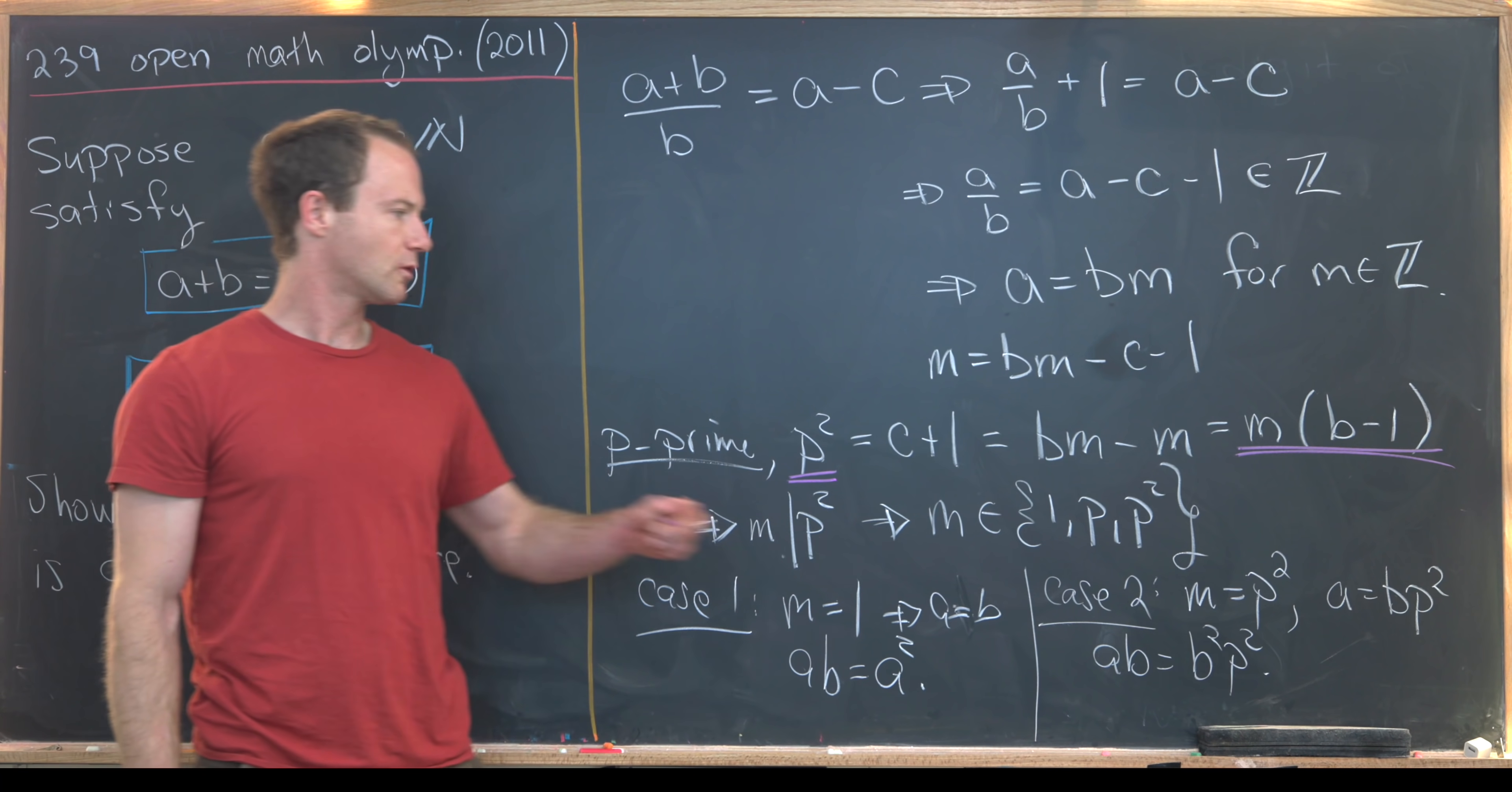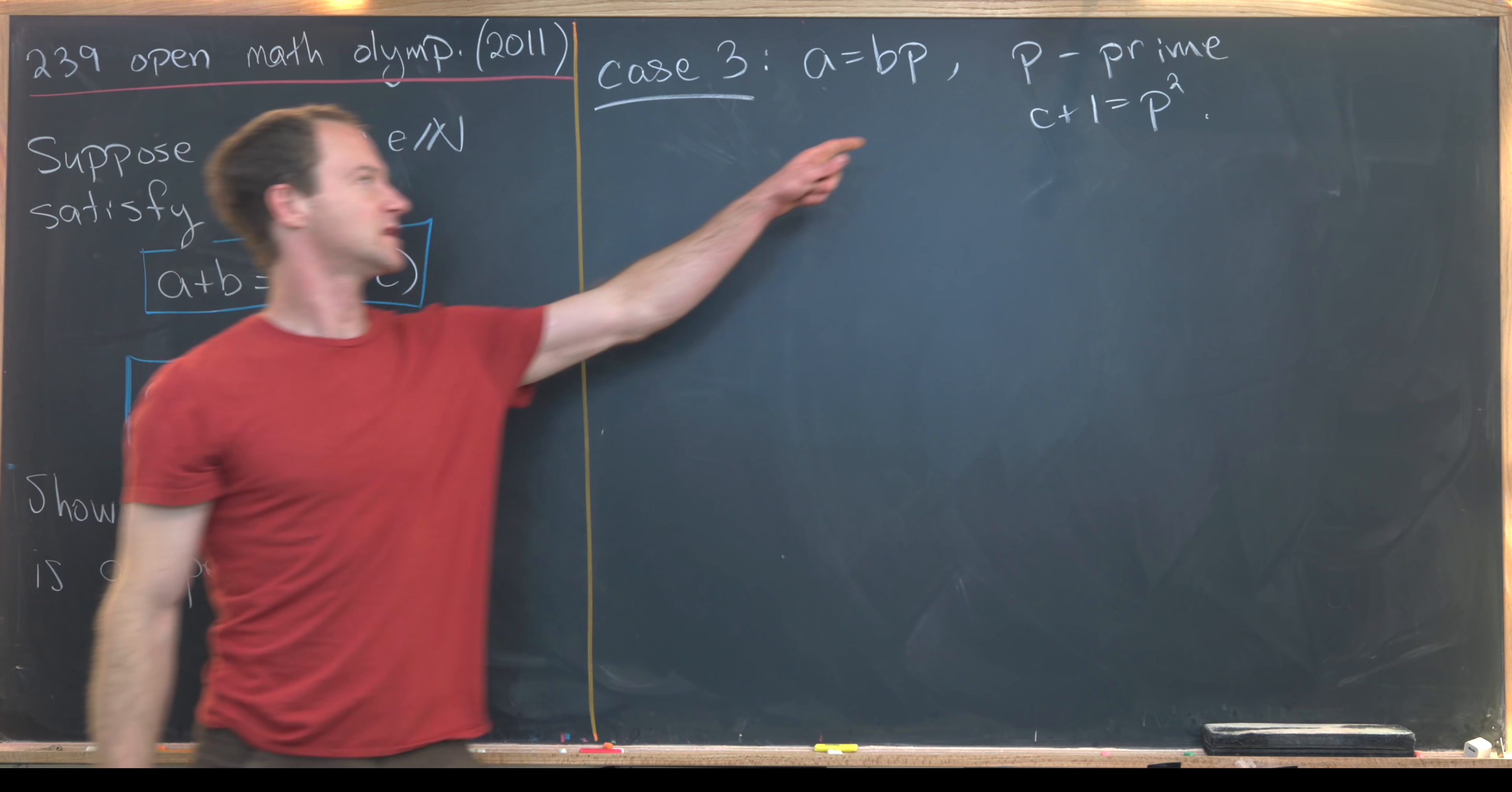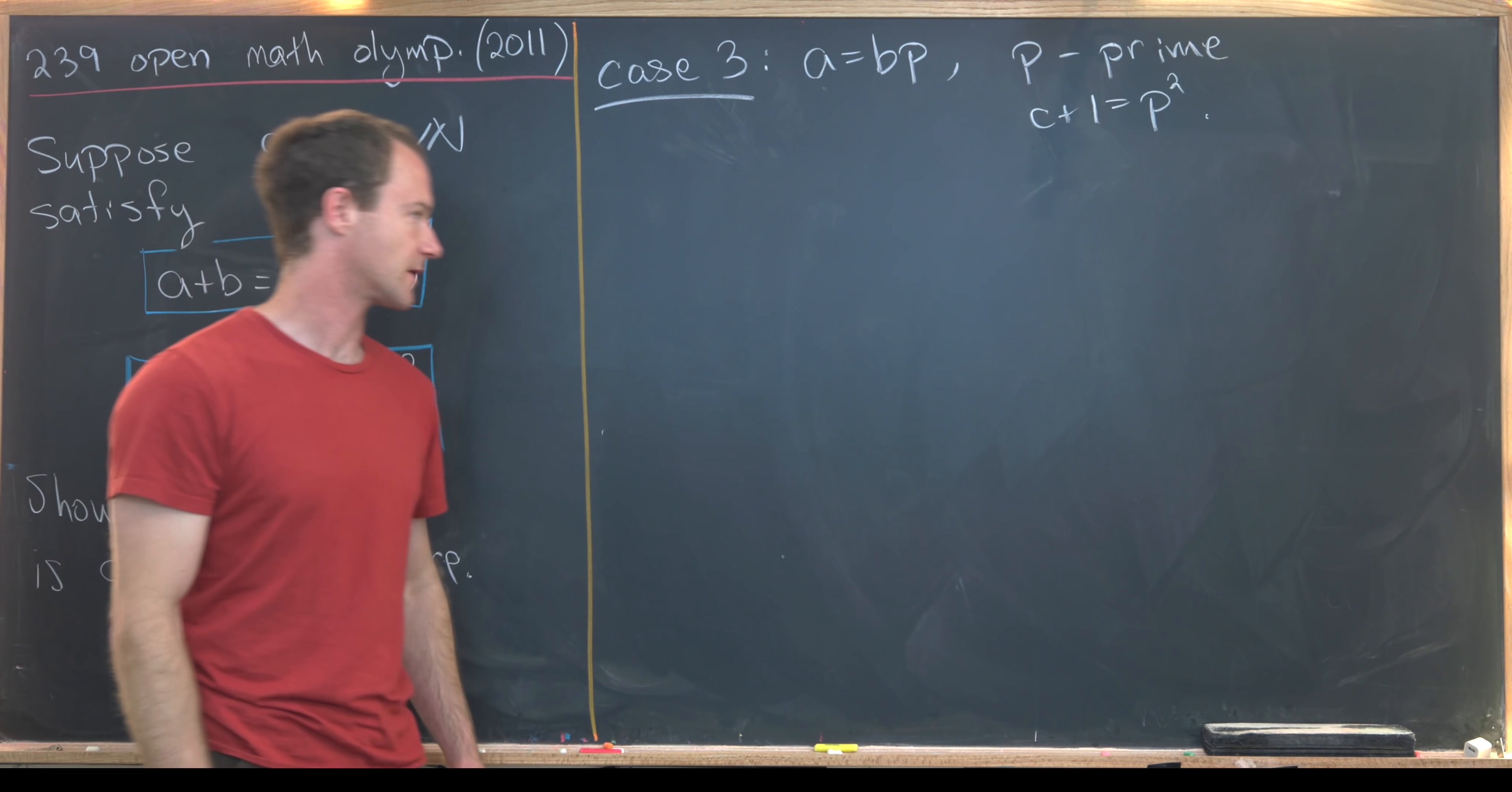So that means all we're left to do is show what happens when m equals p. And we'll do that at the top of the next board. So we're left with one last case, and that's the case when the number that we called m on the last board was equal to our prime p. That collapses to saying that a is a p multiple of b. So let's just reiterate that p was that special prime so that c+1 = p², which is again one of our given things over here.